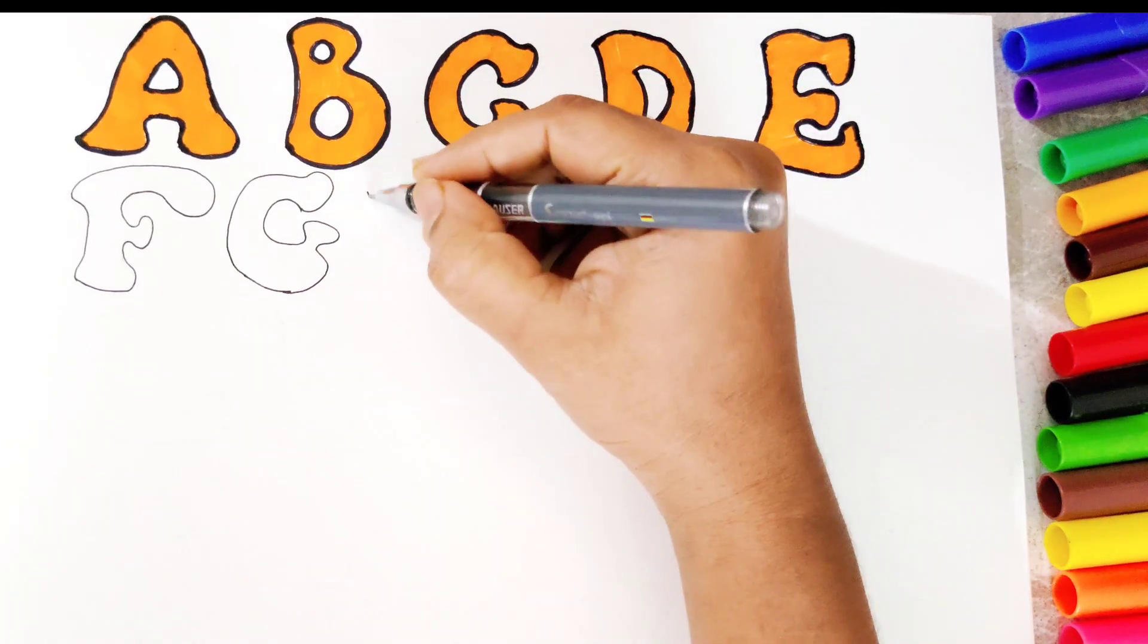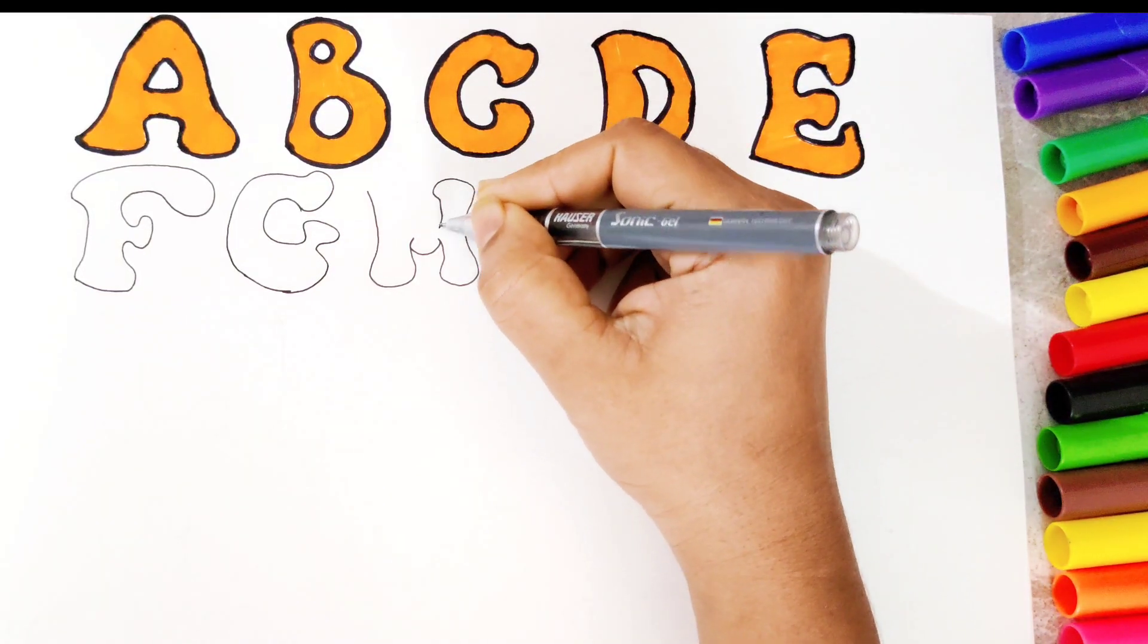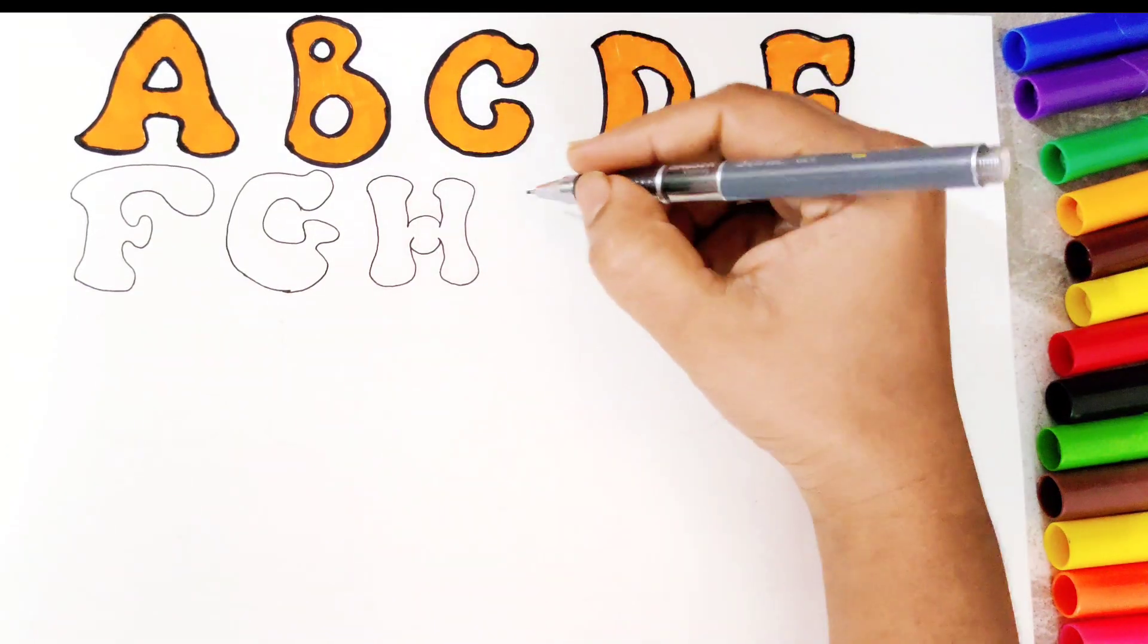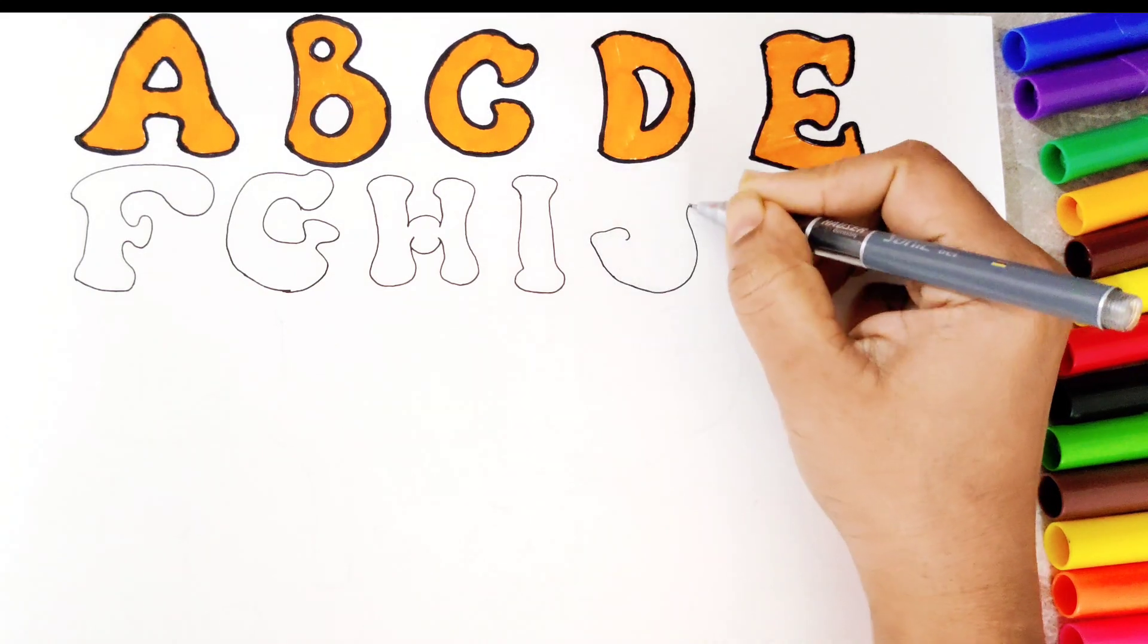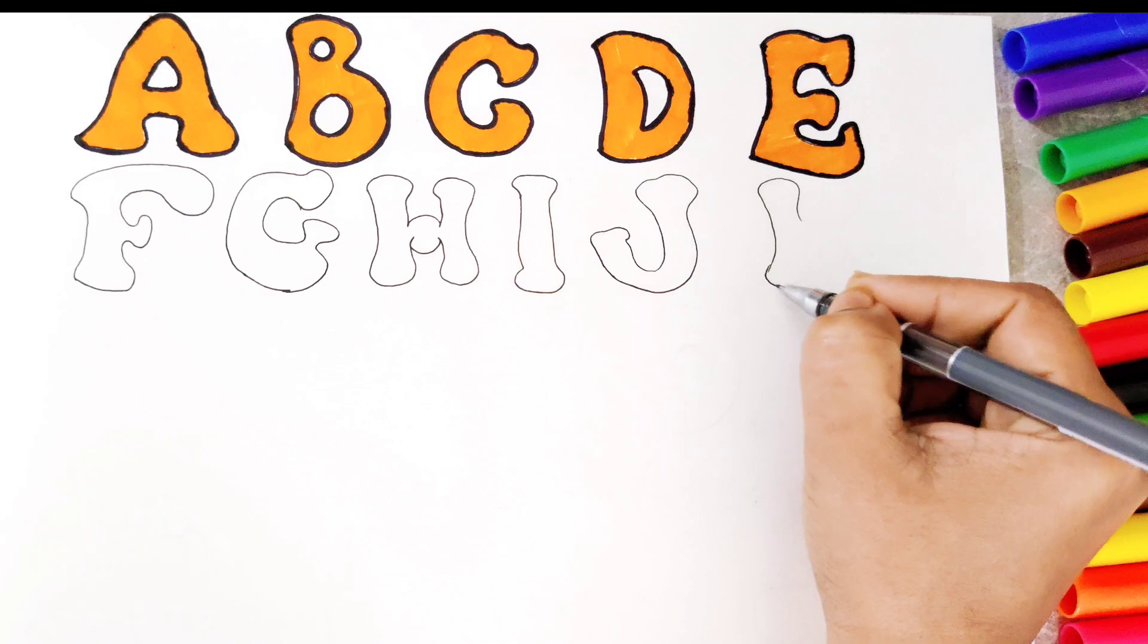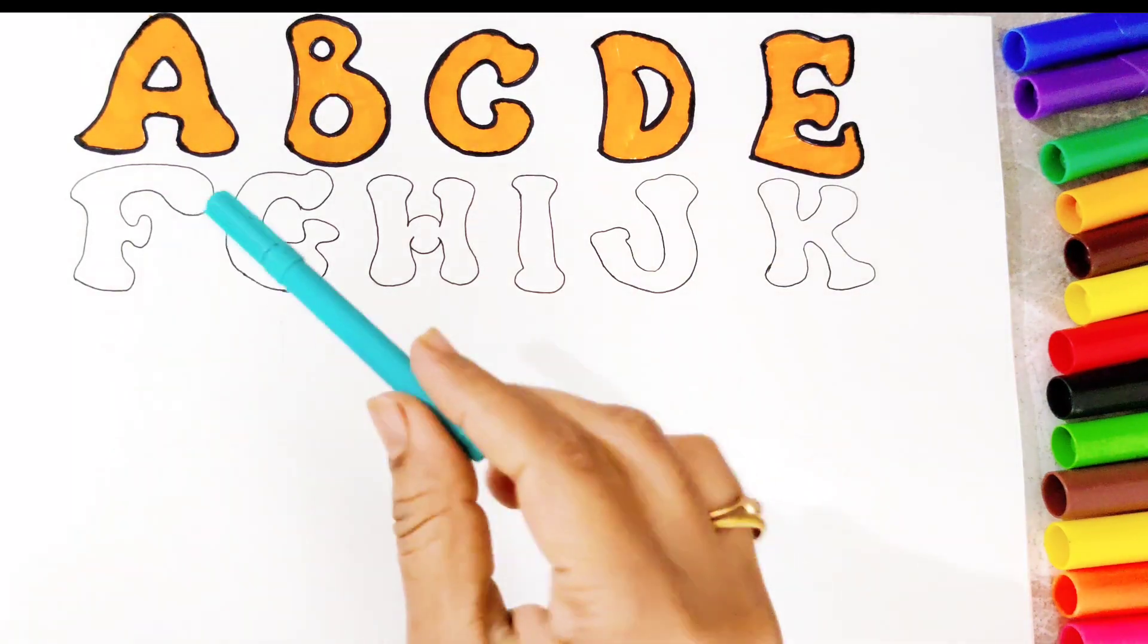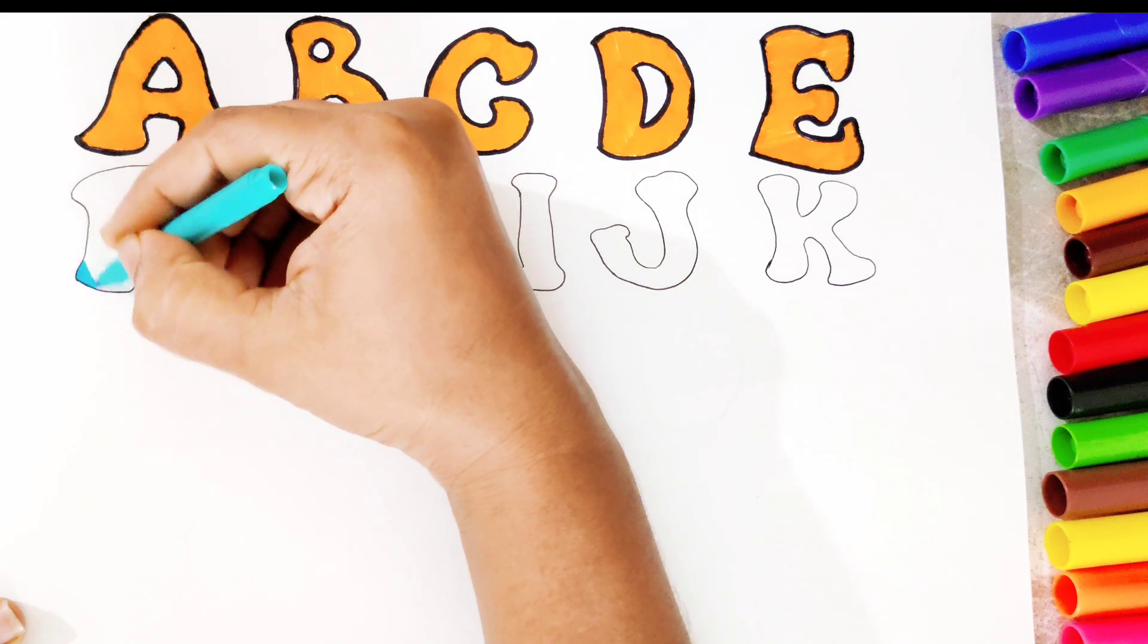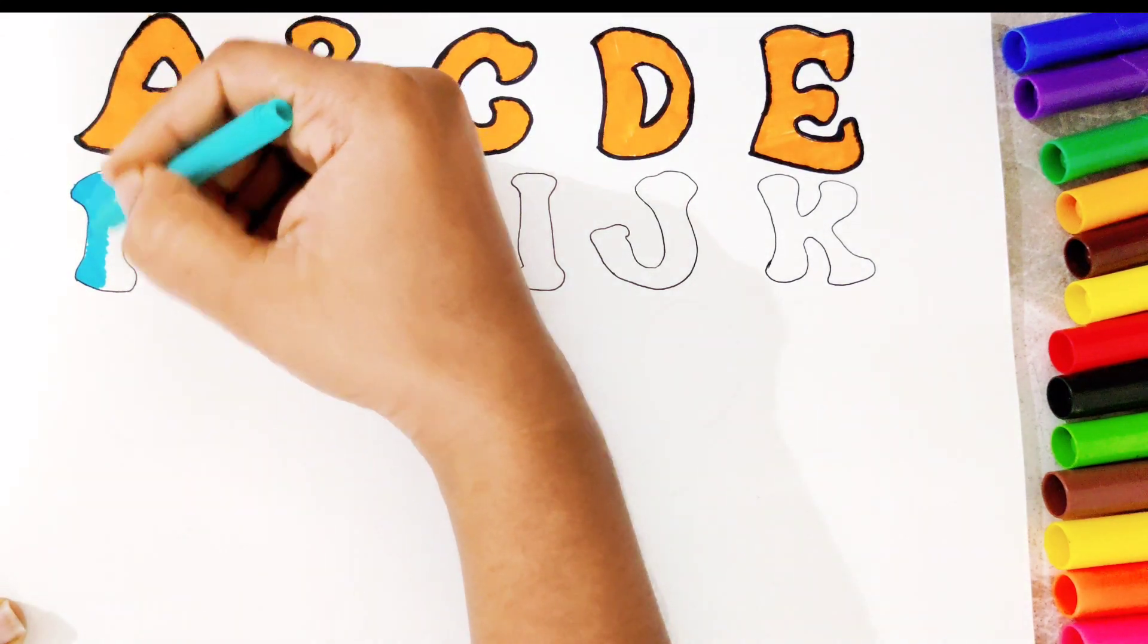G for goat. H for horse. I for ice cream. J for joker. K for kite. Wow, these alphabets are also ready. Now let's fill blue color in all of them.